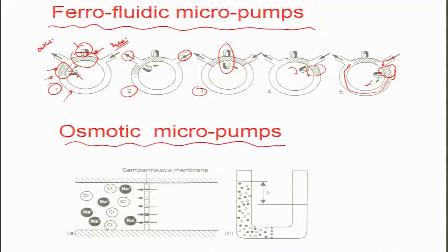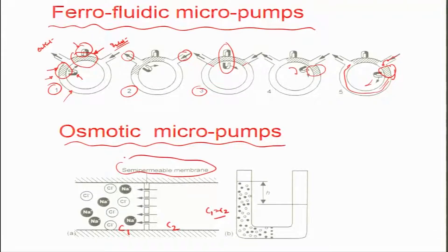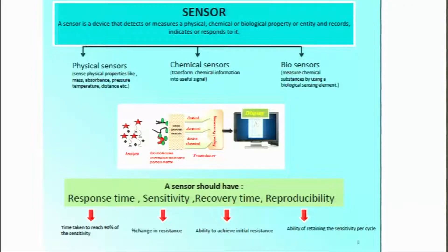There are also osmotic micro pumps where there is a membrane across which diffusion of fluids occurs, so that concentration differences are eliminated. The membrane stops working after concentrations C1 and C2 on both sides equalize. This is based on the concept of a semi-permeable membrane, which carries out transport by the osmotic pressure difference due to concentration changes across two domains — another form of actuation mechanism enabling flow from one side to the other.